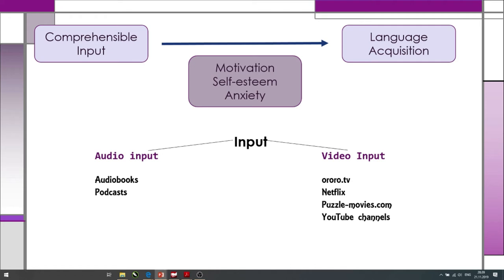There are mainly two forms of input we can get. The first is audio input — we can listen to audiobooks, which you can find on YouTube, and they should fit your level and be understandable for you. Next is podcasts — you can download podcast applications on your smartphone and listen while driving or washing dishes. The material should not be too difficult for you. For example, BBC's six-minute learning English — there are a lot of such podcasts.